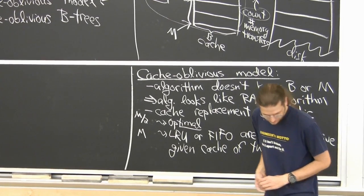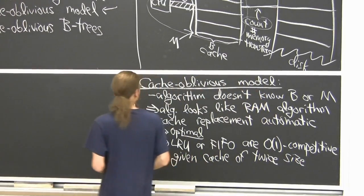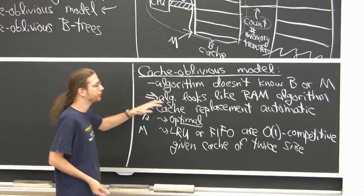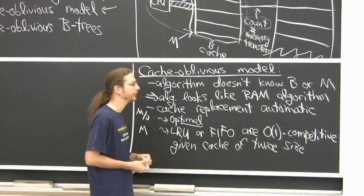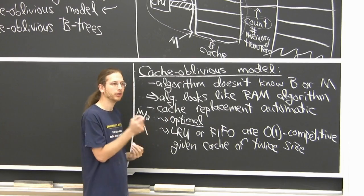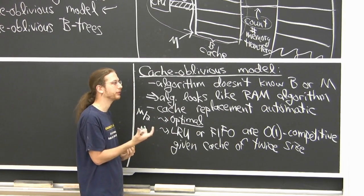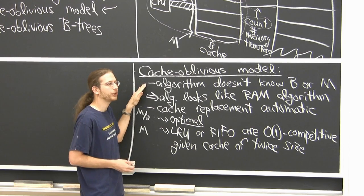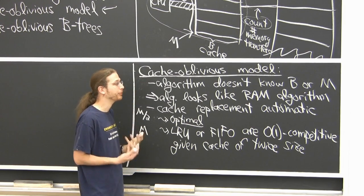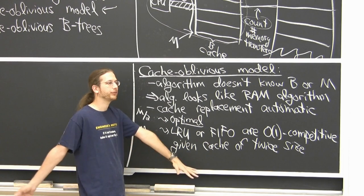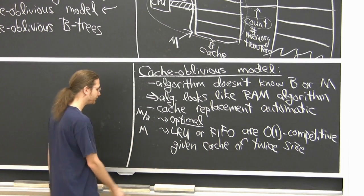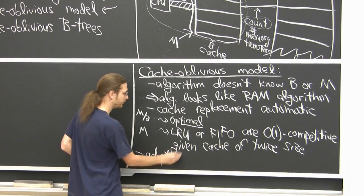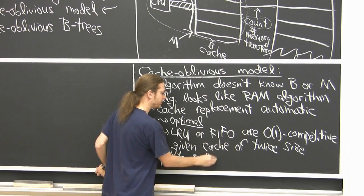If you have a good cache-oblivious algorithm, it's good simultaneously for all B and M. Whereas B-trees need to know B and have the right branching factor, a cache-oblivious data structure must be optimized for all values of B and M simultaneously. This has nice side effects: you essentially adapt to different values of B and M. If you have a multi-level memory hierarchy, each level has its own B and M, and a cache-oblivious algorithm optimizes transfers at every level simultaneously.